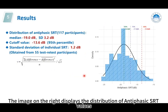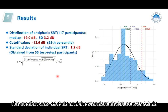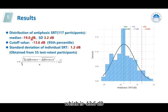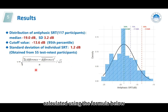The image on the right displays the distribution of antithelastic SRT values. The antithelastic SRT values follow a normal distribution, confirmed by the KS test. The median was minus 19 dB and the standard deviation was 3.2 dB. The cutoff value is set at the 95th percentile, which is minus 13.6 dB. The standard deviation of individual SRT values was 1.2 dB, calculated using the formula below.